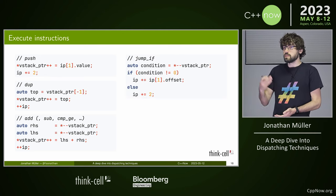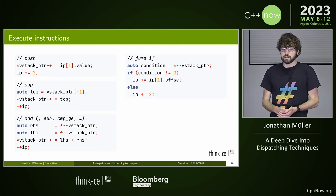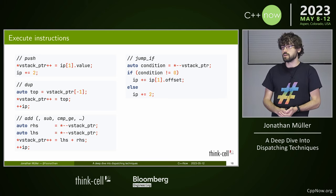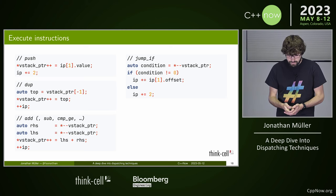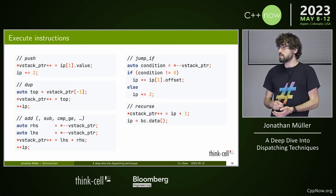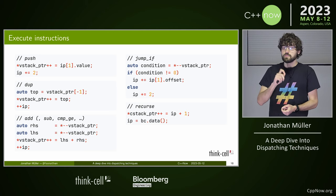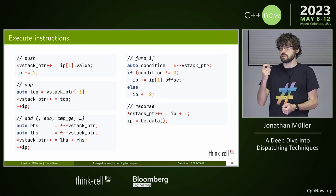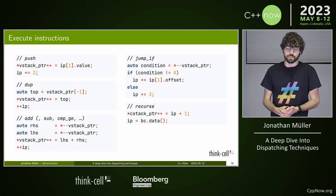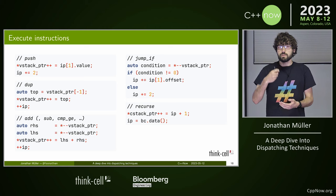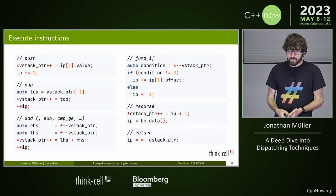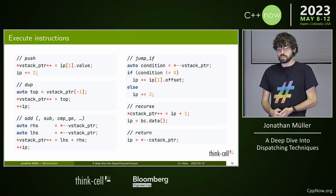A conditional jump pops the value from the VStack — if it's non-zero, we jump to the offset; otherwise we skip past the opcode and offset. Recurse saves the instruction pointer on the call stack, noting that we save the address after the recurse instruction so return doesn't just loop back. Then we jump to the beginning of the function. Return simply jumps to the position we just saved.